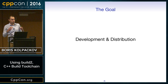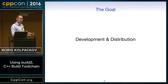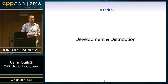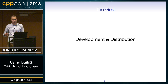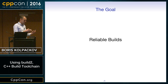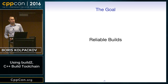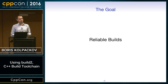We also want to handle development and distribution, which pull design in different directions. For development you want a powerful, flexible build system and don't particularly care how portable it is. For distribution, the end user wants the simplest thing that gets the job done and gets out of the way. We also want reliable builds — I used to find myself upgrading packages, changing options, running the build system, having it say everything is up to date but not trusting it, so I'd clean and rebuild from scratch. That's a waste of time, so we want to fix that.